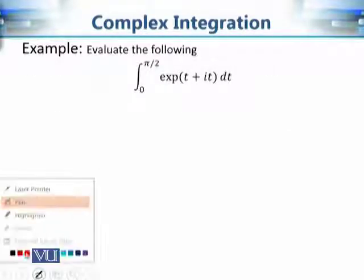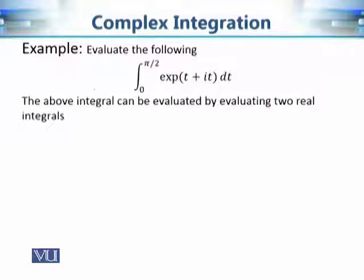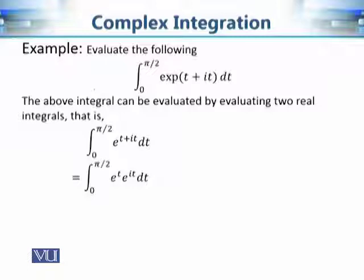Now let's move on to a more complicated example. Consider the exponential function exp(t + i·t), and we want to evaluate it from 0 to π/2. The above integral can be evaluated by computing two real integrals according to our definition. To separate the real and imaginary parts, we write e^(t + i·t) = e^t · e^(i·t), and using Euler's formula this becomes e^t · (cos t + i·sin t).